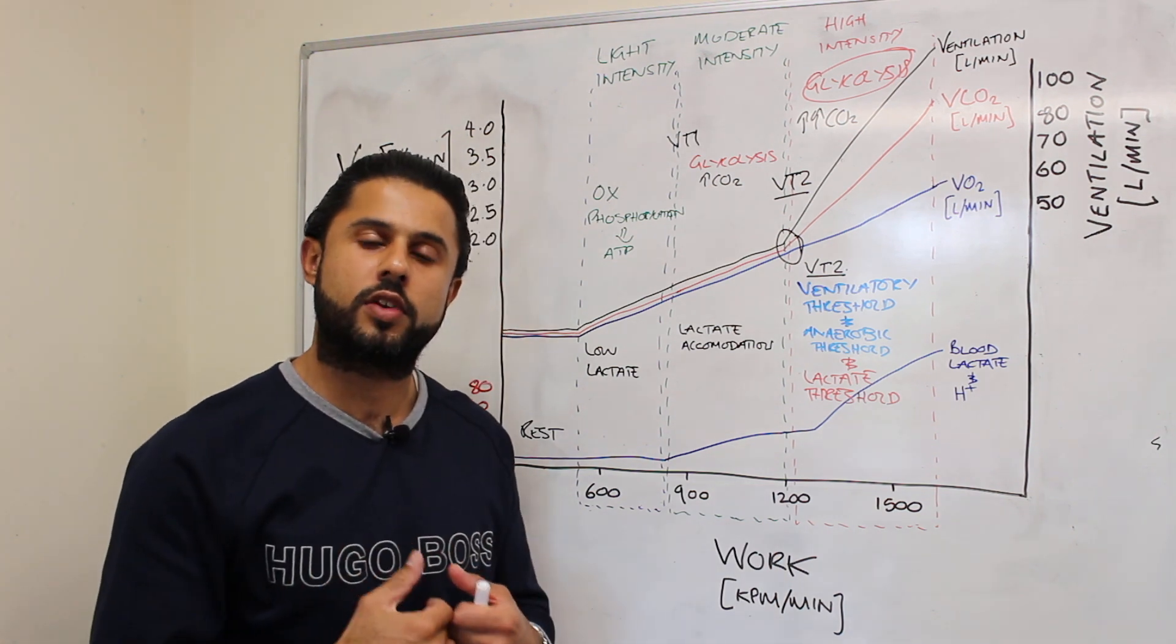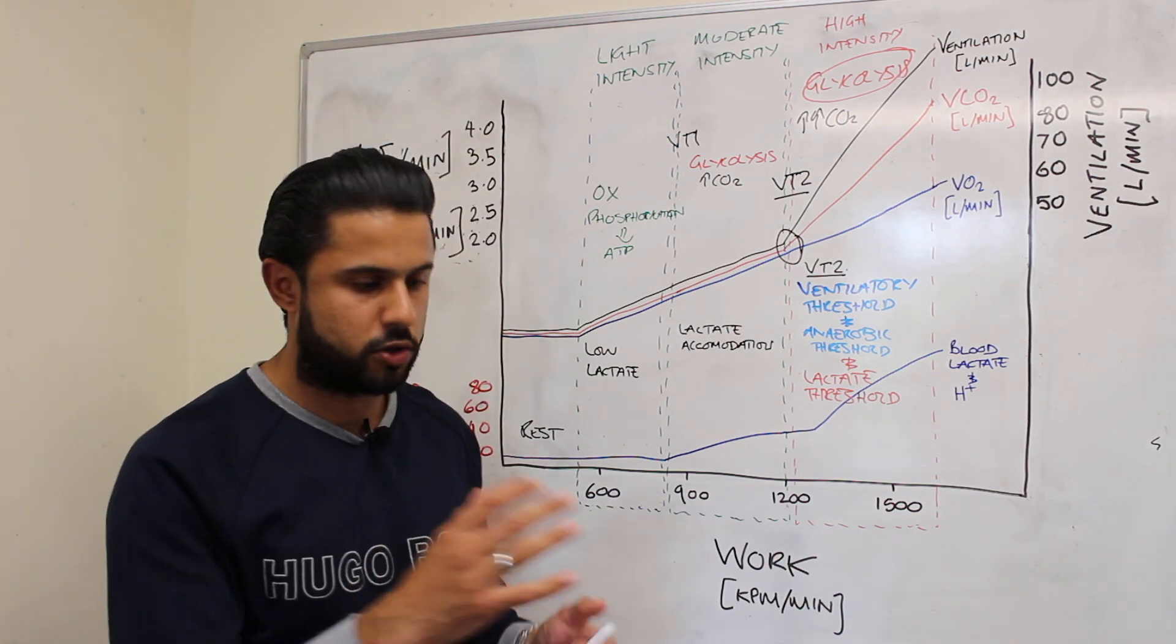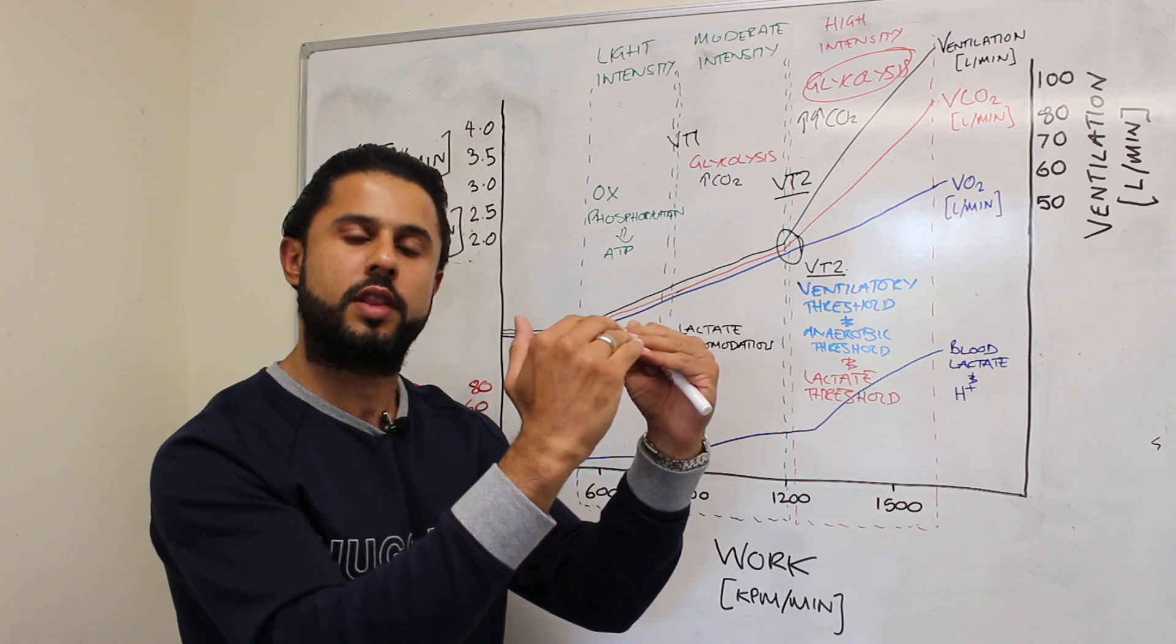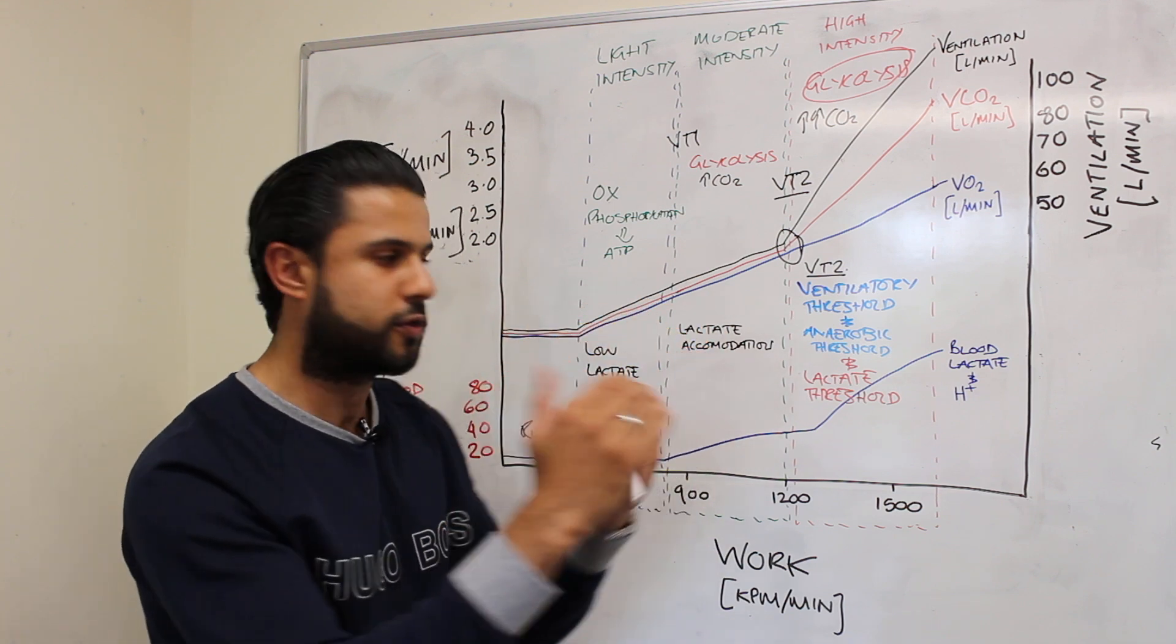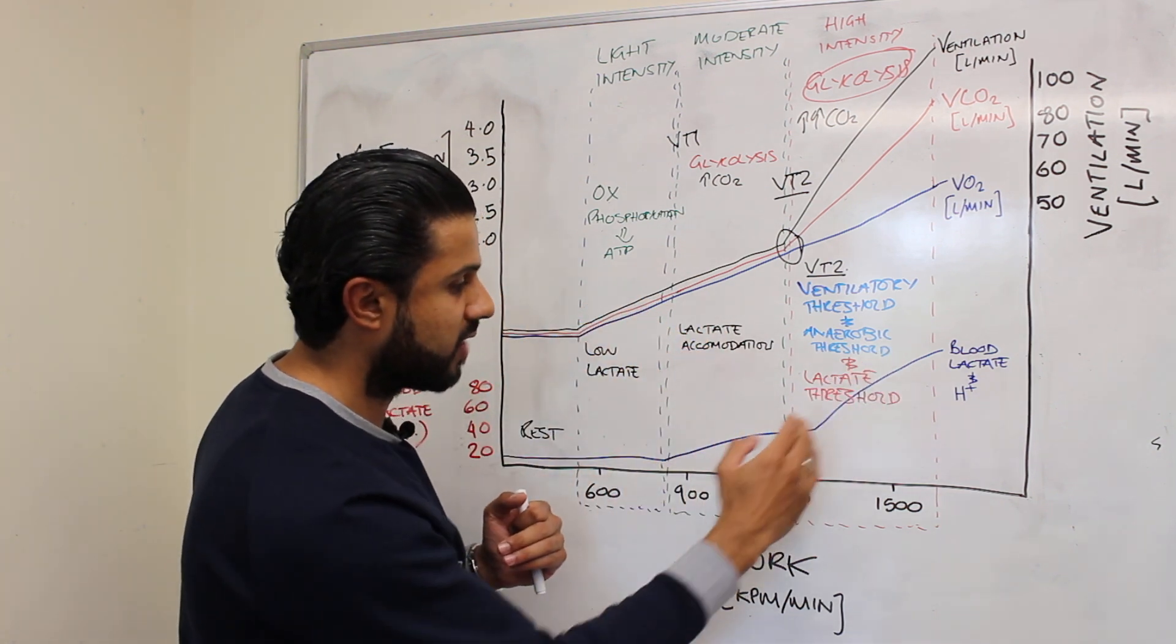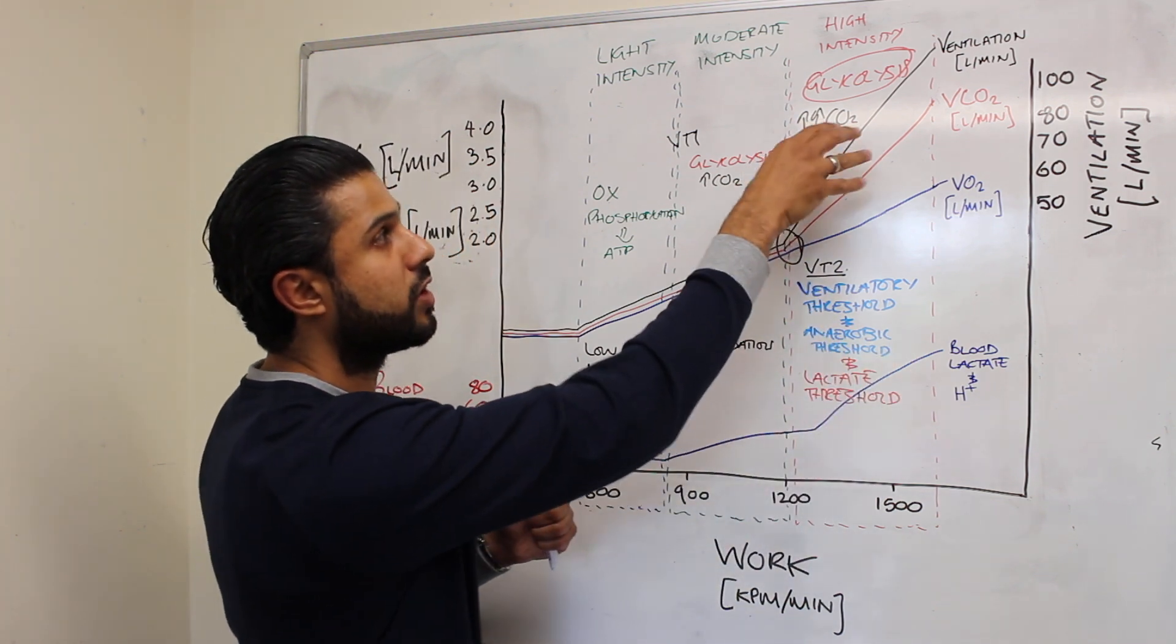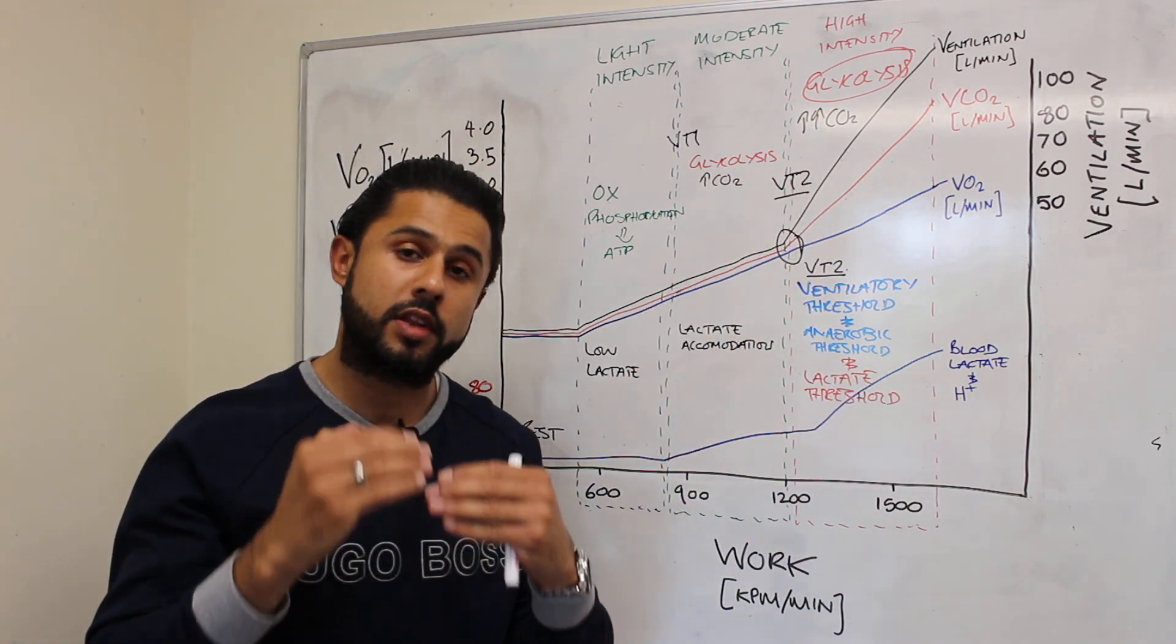Now we have to be cautious about the lactate threshold because lactate increase could also be as a result of reduced clearance. So there could be a normal consistent level of production but that lactate's not being cleared well enough so it accumulates and that's why we get an increase in the lactate rather than it reflecting increased production due to glycolysis.